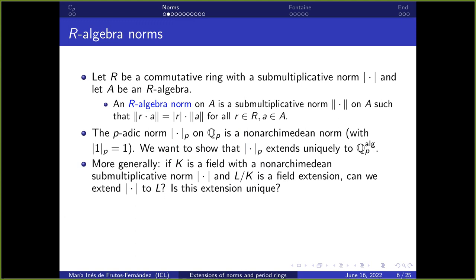The last definition we need: if we have an R-algebra A, an R-algebra norm is a sub-multiplicative norm on A compatible with the algebra structure, meaning the norm of r acting on A equals the norm of r times the norm of a. The p-adic norm is an example — it is a non-Archimedean norm on Qₚ with norm of 1 equal to 1, and we want to show it extends uniquely to the algebraic closure.